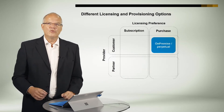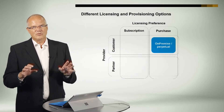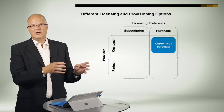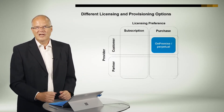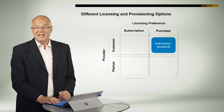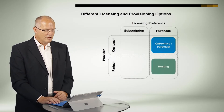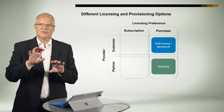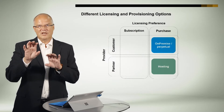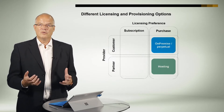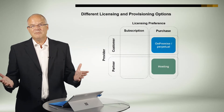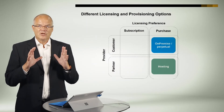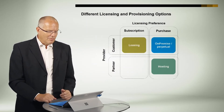If we go through this matrix and look at the individual cells: if you want to purchase a license and the customer operates it on their own, that is the typical perpetual license model we've known for many years — an on-premise deployment. If the customer says, 'I want to own the license, but I'm not in the business of running all that infrastructure,' then we talk about hosting. This can be done by SAP through HANA Enterprise Cloud, or with our partners.